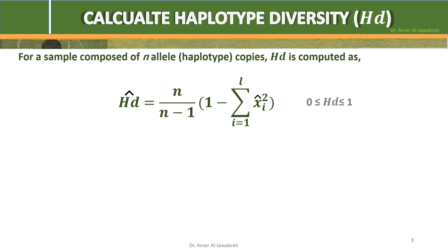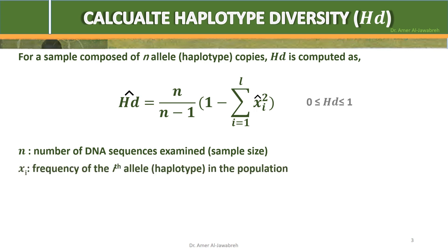N is the number of DNA sequences or sample size. Xi is the frequency of the i-th allele in the population. L is the number of haplotypes or alleles. The hat or caret sign indicates estimation.